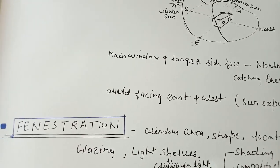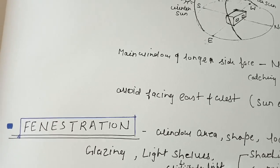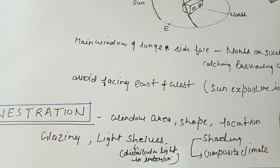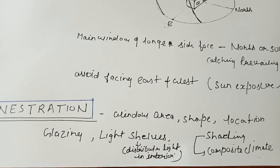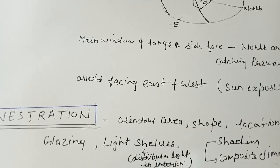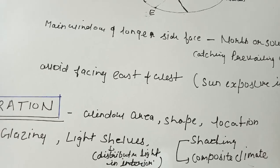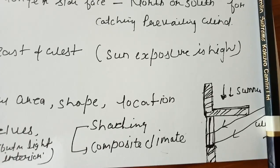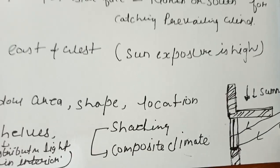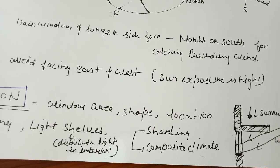Next is fenestration, which is the most important factor in climatic consideration after site orientation. Fenestration covers window area, window shape, and window location, and also provides information for glazing, light shelves, and shading devices. We should use double glazing and light shelves for distribution of interior light. In composite climates, shading is an effective measure — as shown in the sketches, summer rays are blocked while winter sun enters the interior space.